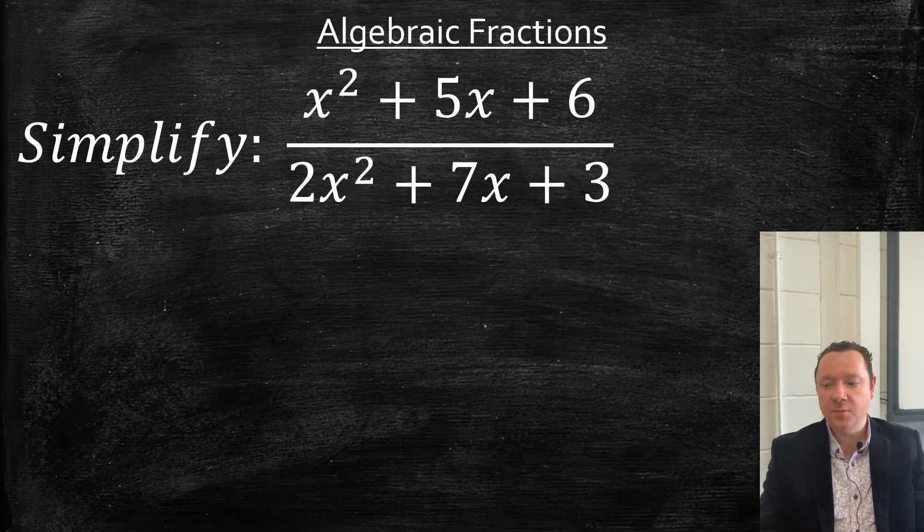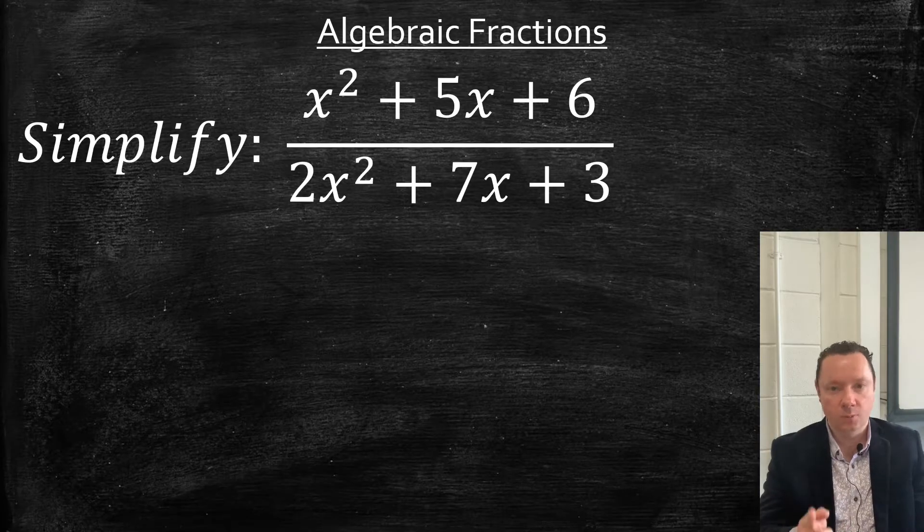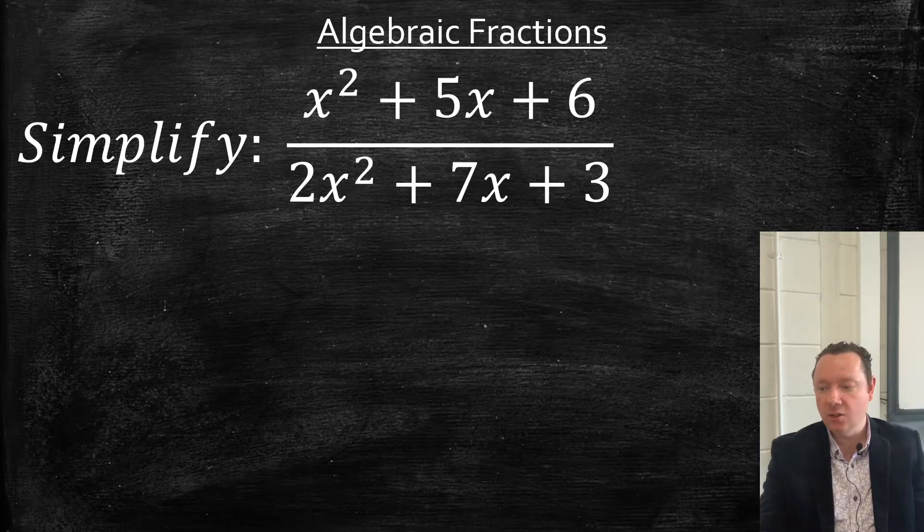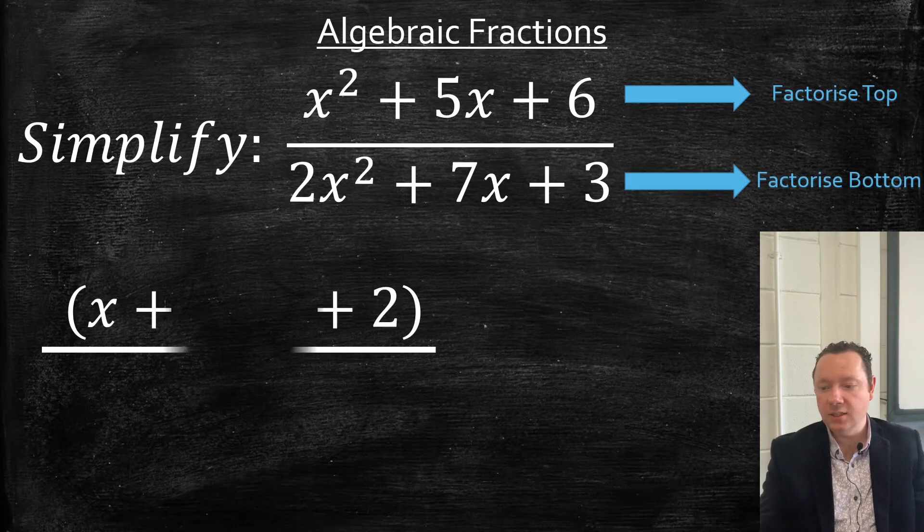Simplify (x² + 5x + 6)/(2x² + 7x + 3). More complicated, both trinomials. But go back to my previous videos on factorising if you need help with this. So we're factorising the top and we're going to factorise the bottom. Factorising the top would give us (x + 3)(x + 2).